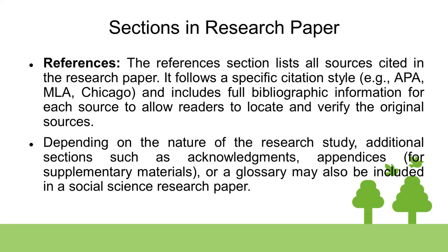Depending on the journal, after the title and abstract you also give keywords, a conflict of interest statement, and funding information — indicating whether anyone provided funding for the article. I hope that today your knowledge has increased regarding how many sections a research paper can have and what role each section plays. For more information, stay with us. Thank you.